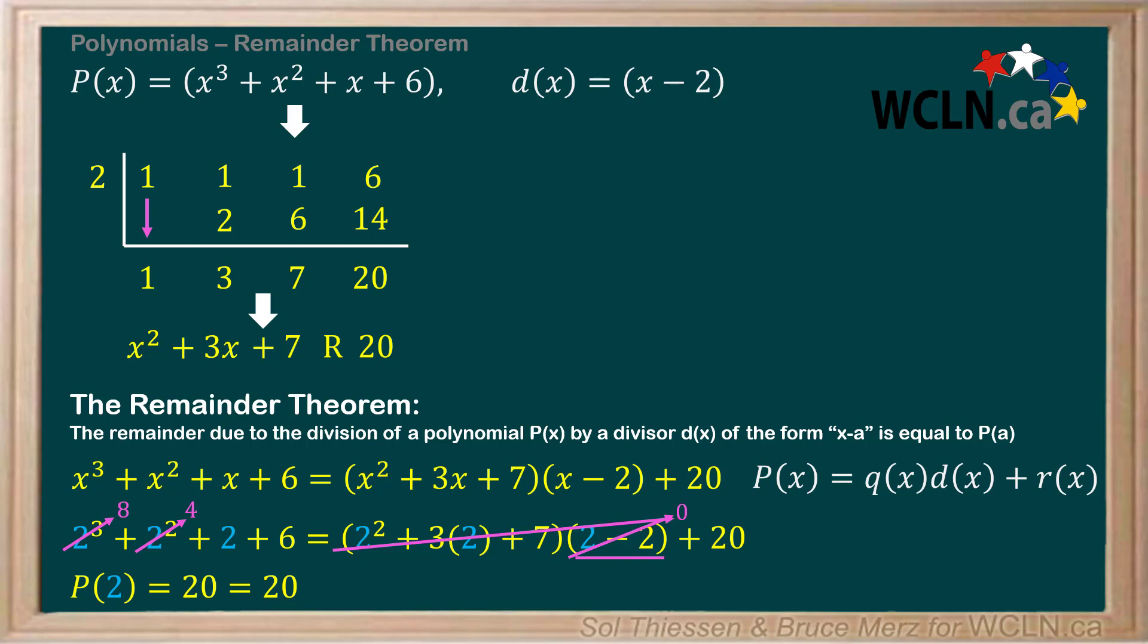From now on, if we want to know the remainder from dividing a polynomial by some divisor of the form x minus a, we don't need to actually perform the division. We can simply evaluate P(a) to determine the remainder. This is a very powerful conclusion and is useful when we want to test whether some divisor binomial is a factor of a given polynomial.